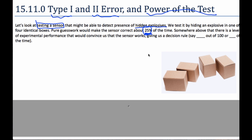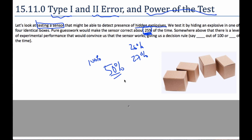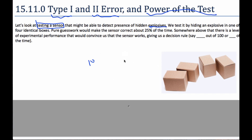But somewhere above 25%, if we did this experiment many times with a special sensor that worked sometimes — how many guesses out of 100 would convince you it's better than just randomly guessing 25%? Think about where that threshold is for you. Is it 26%? 27%? 50%? 100%? When does it change for you that this device is better than random guessing? That's what hypothesis testing is really about.